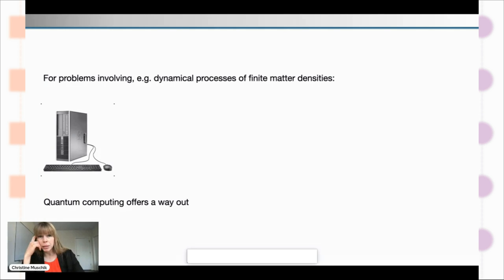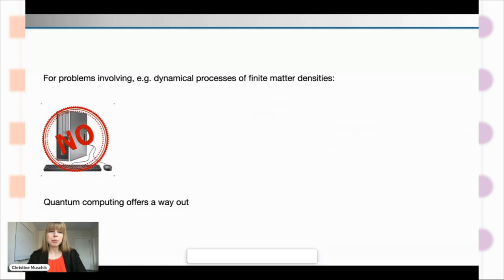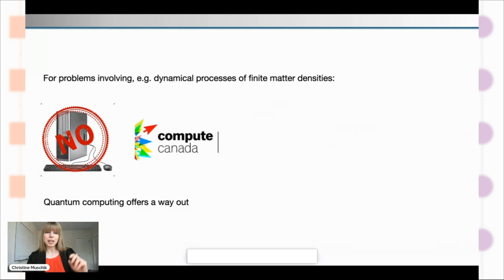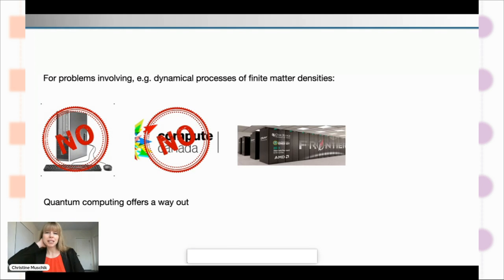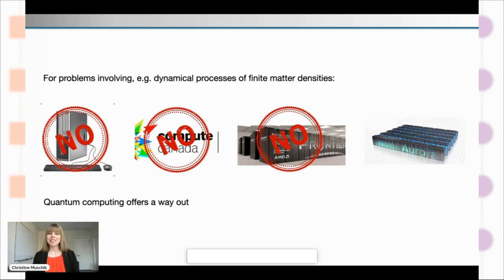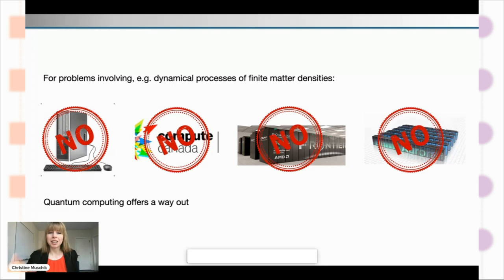For instance, if you have a dynamical process in a gauge theory of finite matter density, I cannot answer it on my computer. Even if I send it to Compute Canada here in Waterloo, no. Even if you send it to the big Frontier computer, no. And not even if I could send it to the planned Aurora supercomputer of the future — even then these problems could not be addressed.